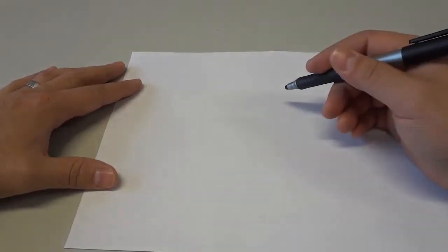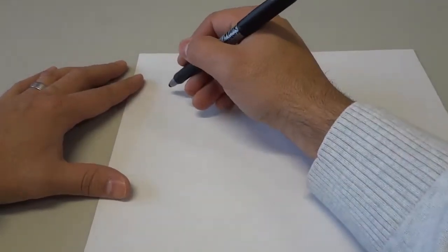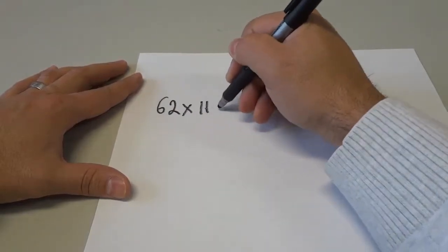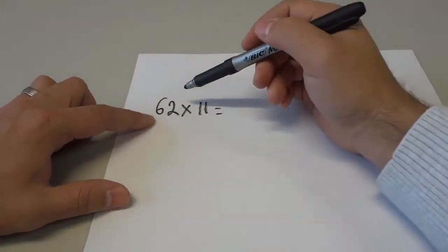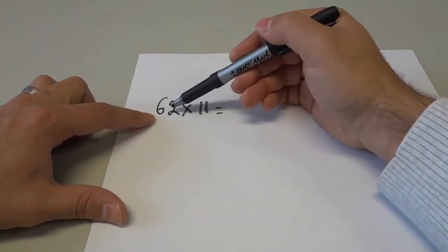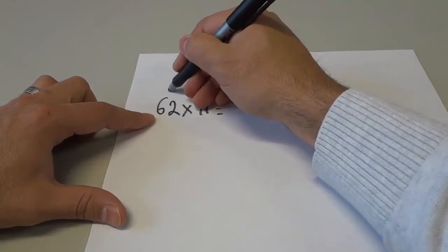I'm going to give you some examples to show you how to do this math trick. So let's say that we have 62 times 11. What you have to do is you have to look at the non-11 numbers, which are 6 and 2, and you have to simply add them together.